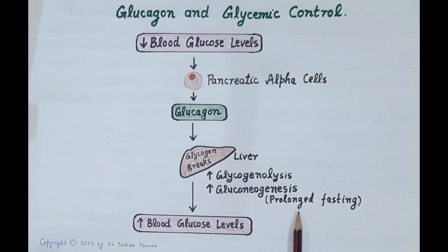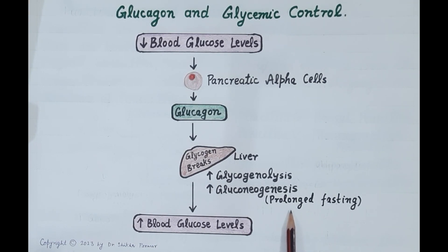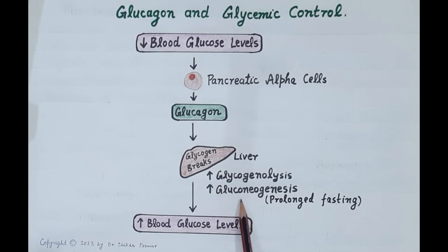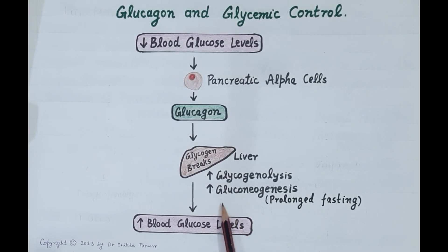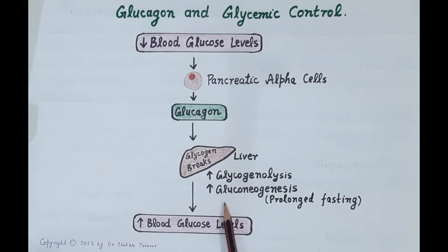In addition, during prolonged fasting, when glycogen stores are depleted in the liver, glucagon stimulates hepatic and renal gluconeogenesis. Therefore, substrates like amino acids, lactate, and glycerol are converted into glucose.